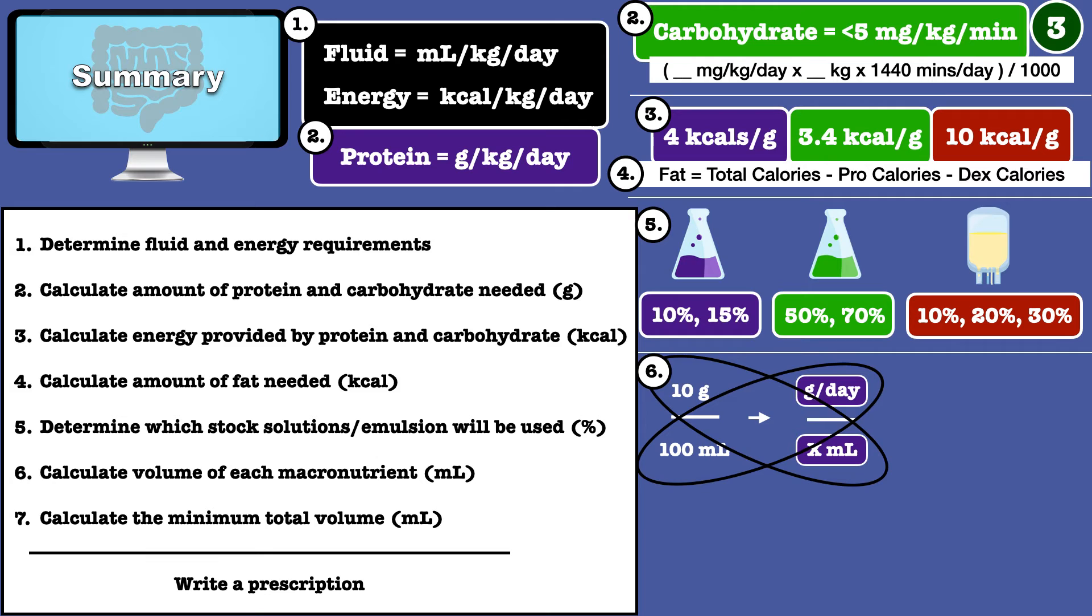Cross multiplication and division allows you to see how much of that solution is needed to satisfy the amount of grams you want to provide.